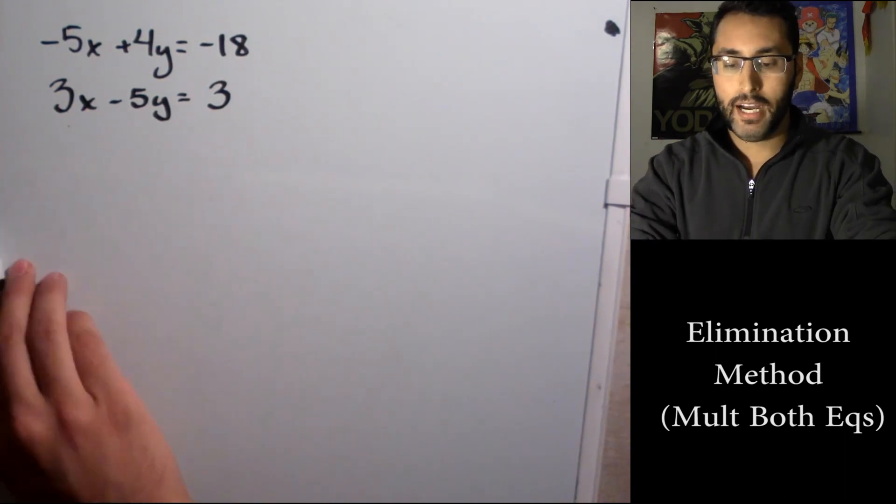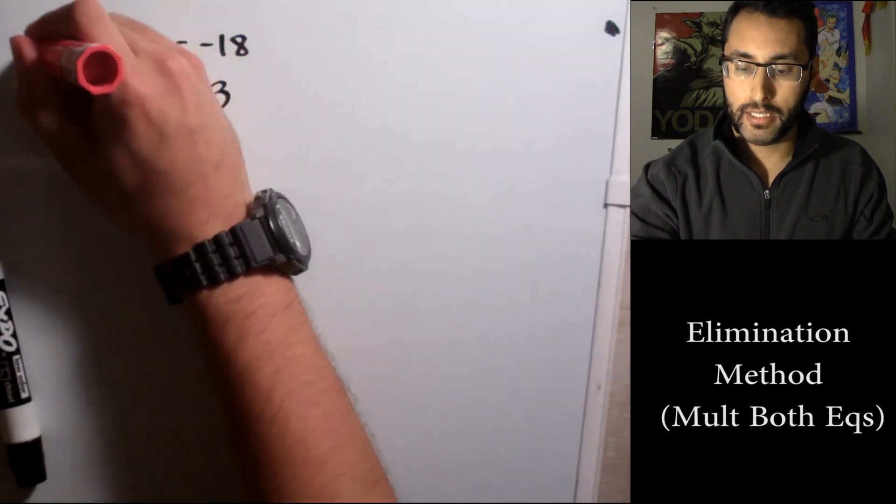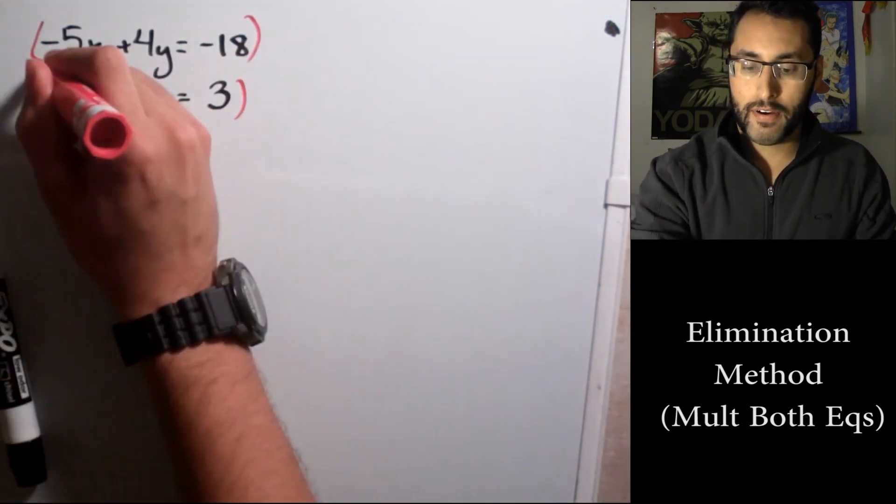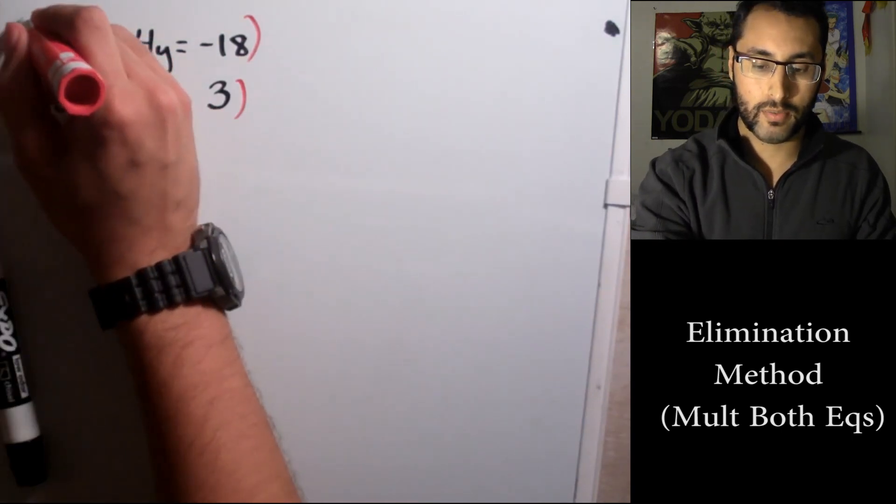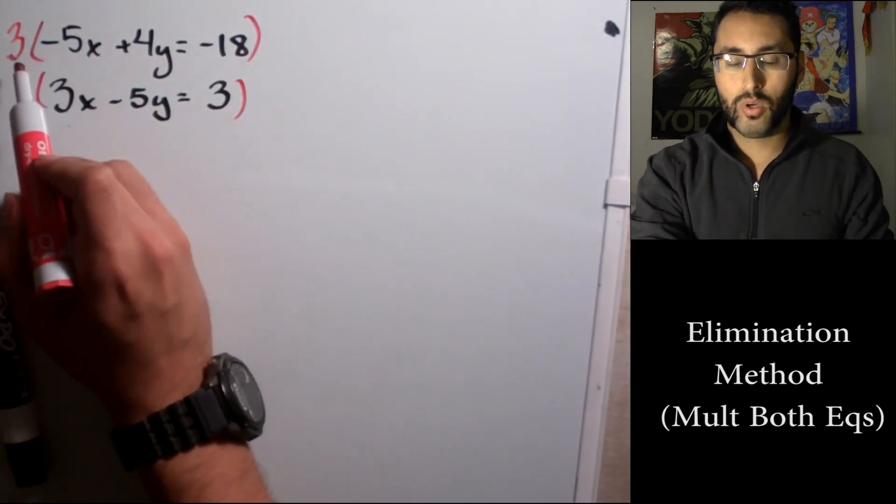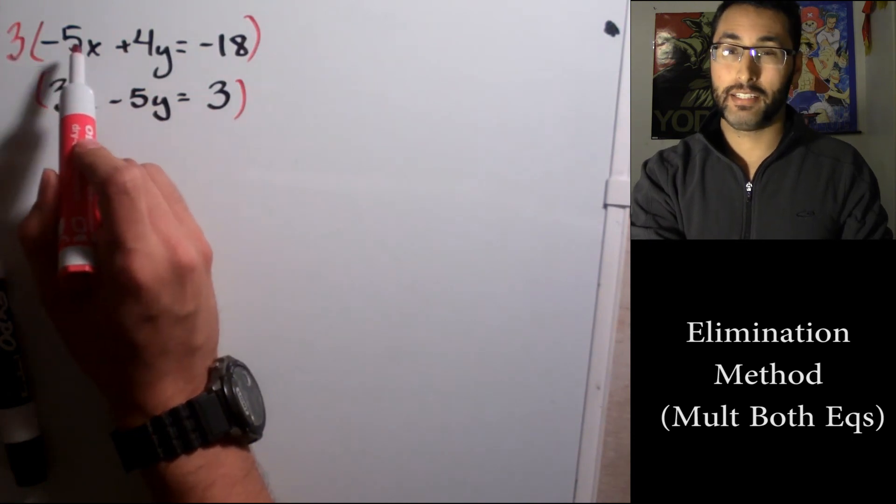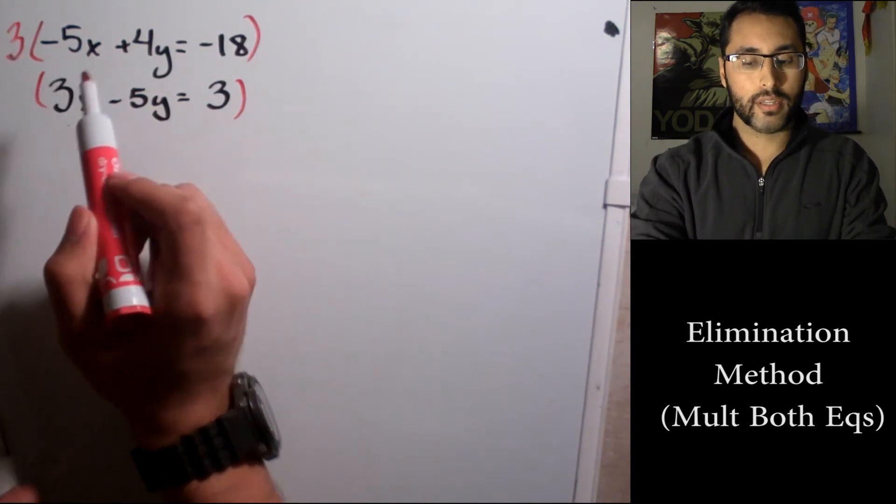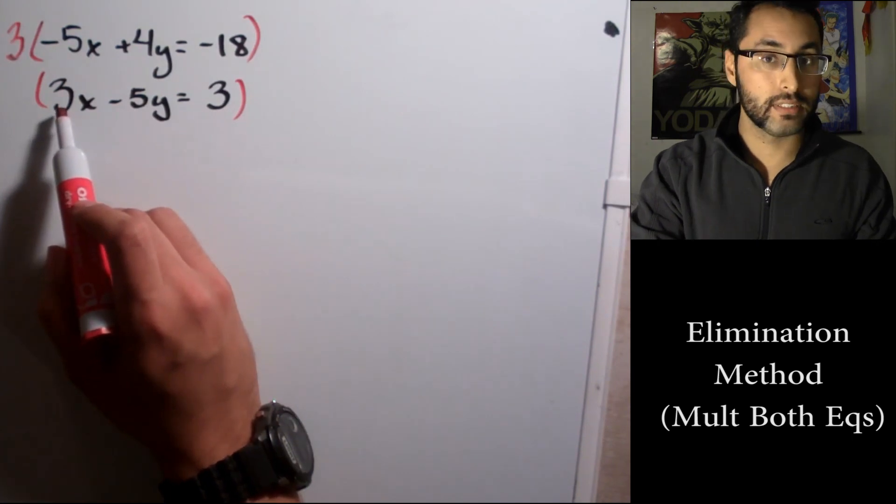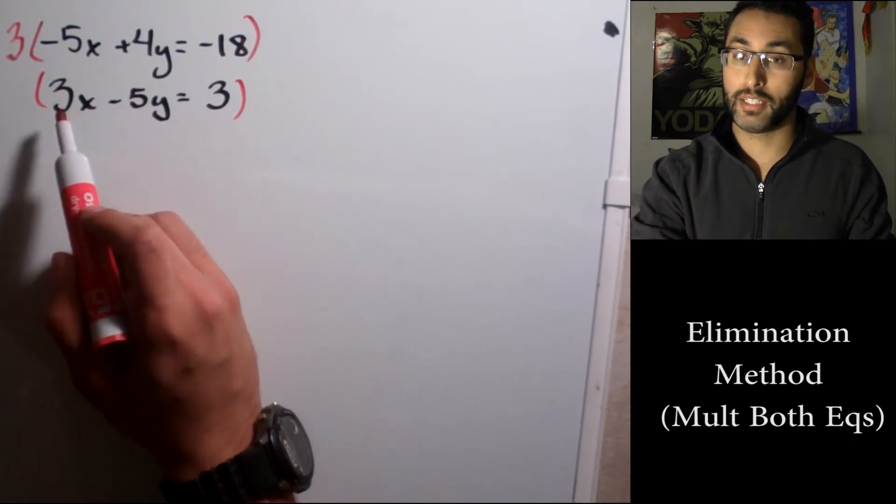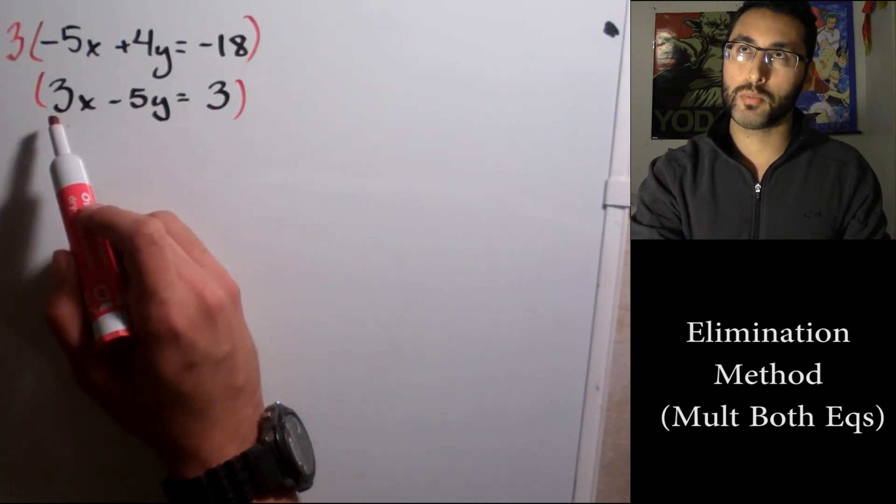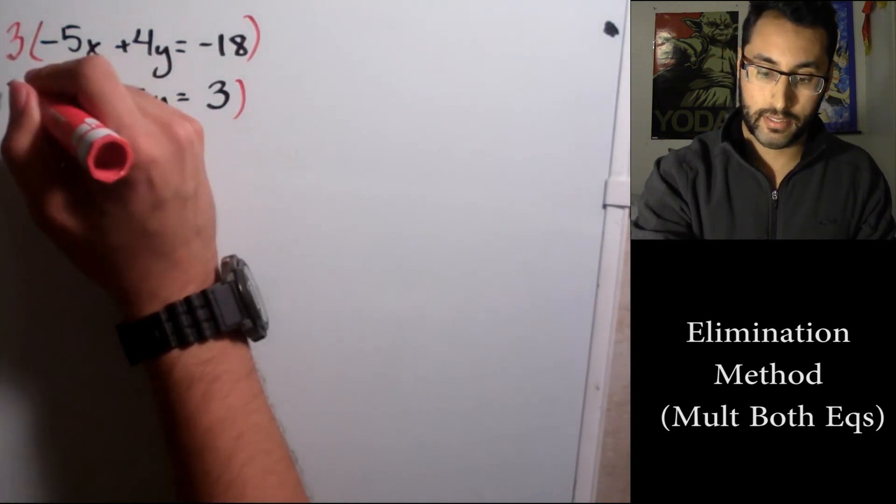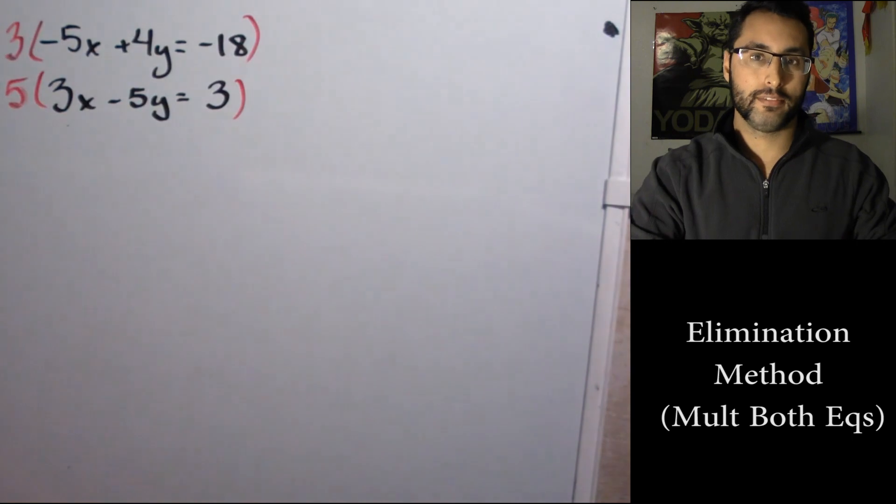Well, if I want to multiply both these equations, if I want this number to become 15, I've got to multiply it by 3. When I multiply 3 times -5, I get -15. So I really want this number to become a positive 15 to become inverses so I can eliminate. In order for 3 to become positive 15, I want to multiply it by positive 5.